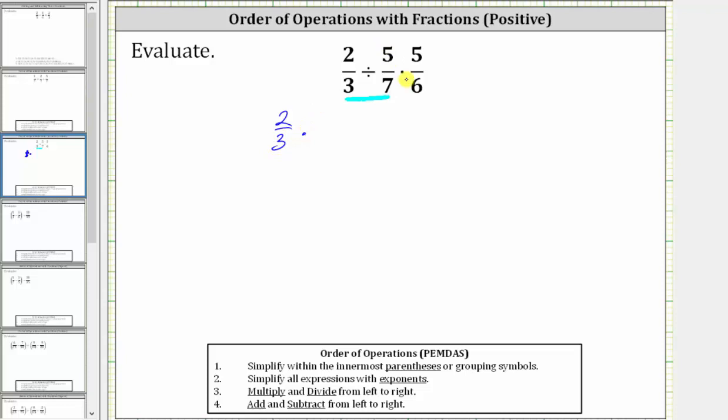times the reciprocal of 5 sevenths, which again is 7 fifths, and then times 5 sixths.